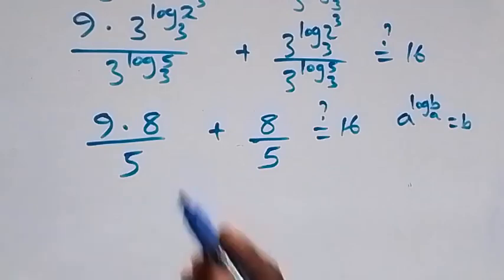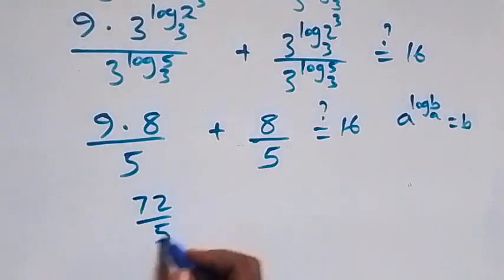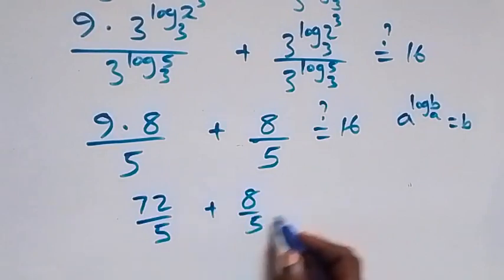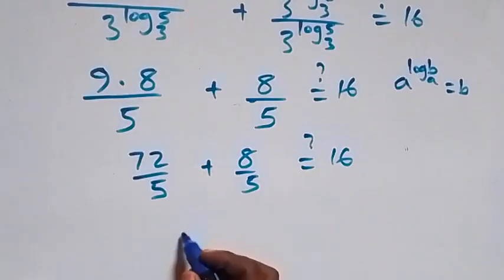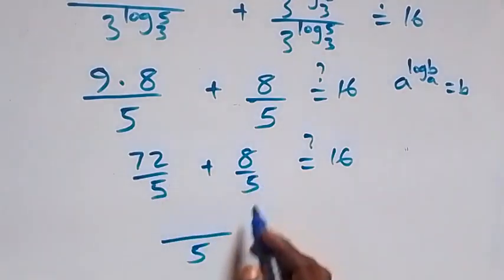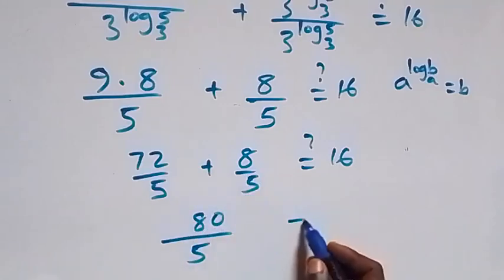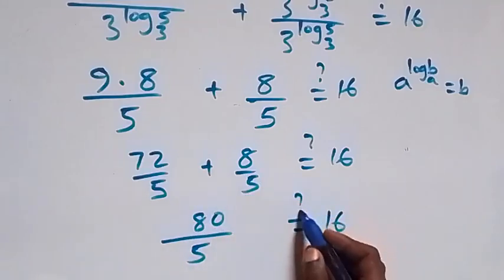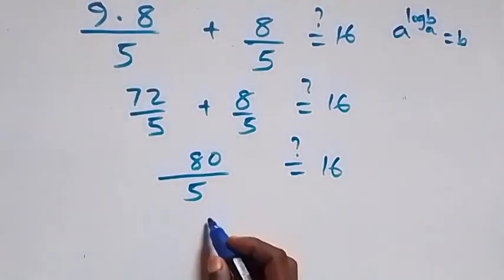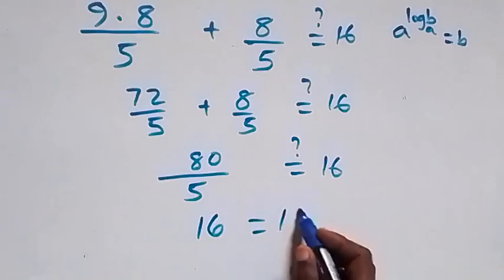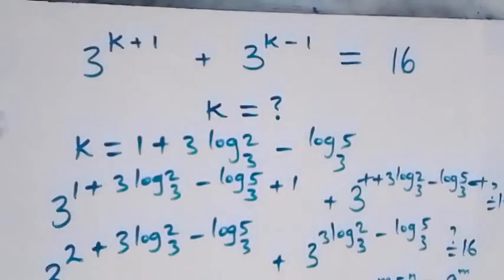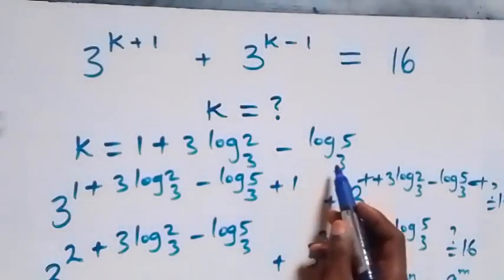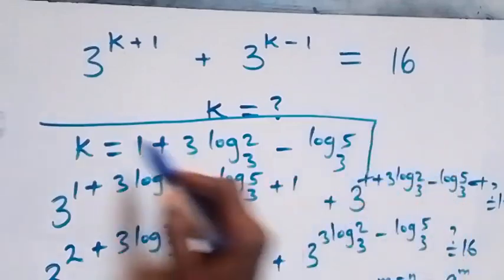So we have 72 over 5 plus 8 over 5 equals 16. Same denominator 5, so 72 plus 8 equals 80, and 80 divided by 5 equals 16, which is equal to 16. Left hand side equals right hand side, so we conclude that k equals 1 plus 3 log 2 base 3 minus log 5 base 3 satisfies this given problem.